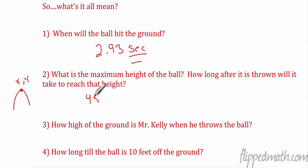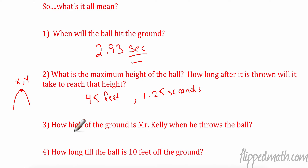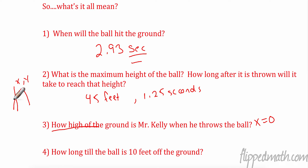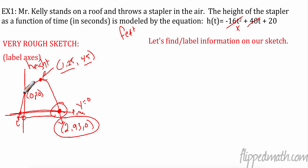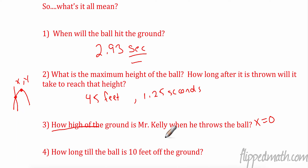How high off the ground is Mr. Kelly when he throws the ball? When he throws it, time x = 0, so we need the y-intercept. We found that already without the calculator: the y-intercept is 20 feet. So his initial height is 20 feet.